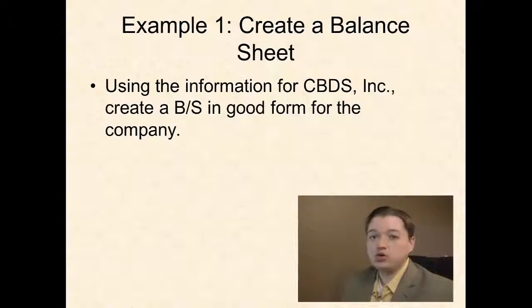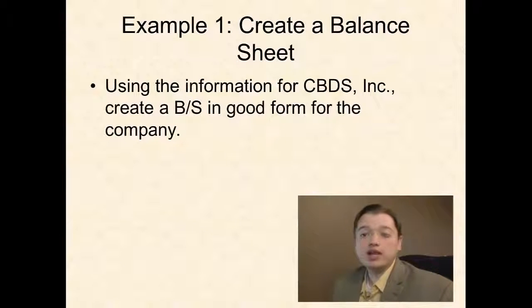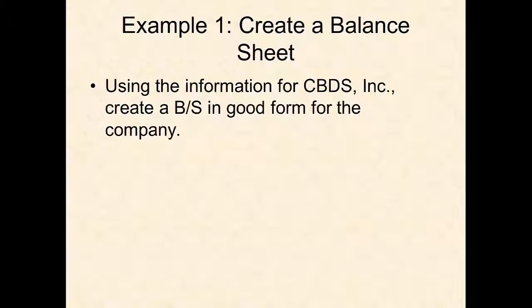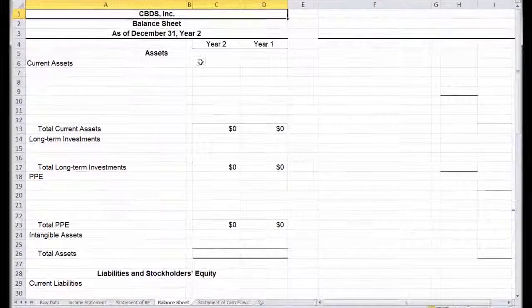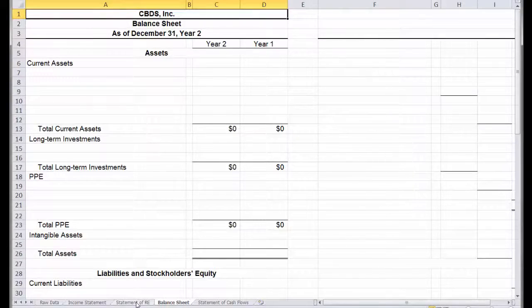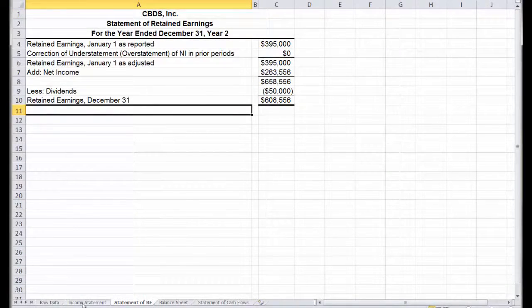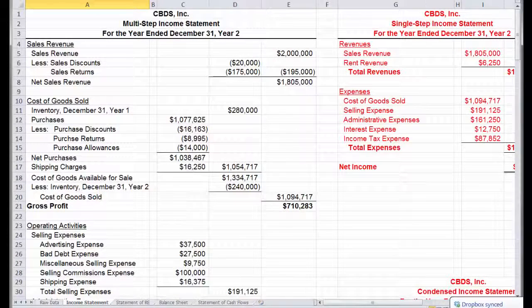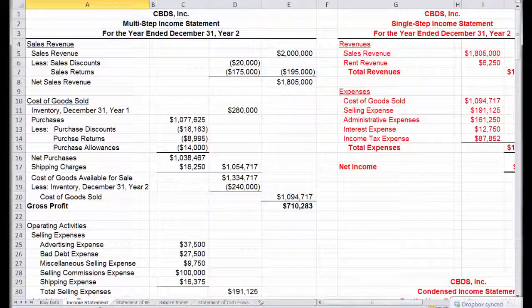For us to do that, we're going to go back to our example of CBDS Incorporated. If you remember from our previous lecture, we have already created an income statement and a statement of retained earnings for this company. Now, we're just going to add a balance sheet. Let's go ahead and transition to Excel. Here's my blank template. Now I want to focus on the balance sheet.